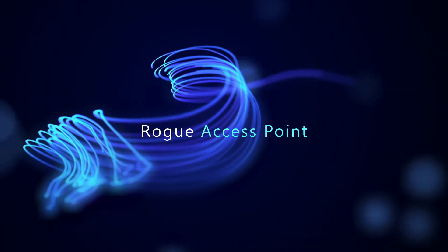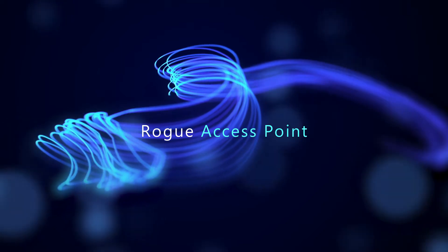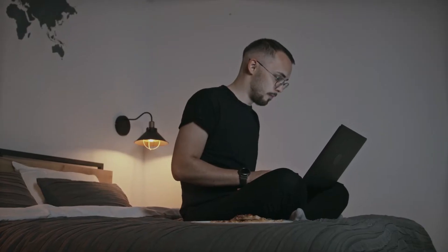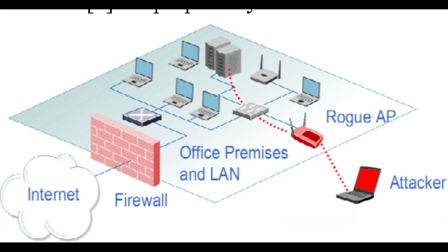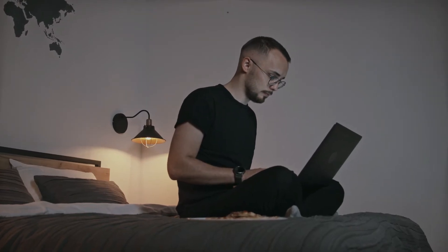The third is rogue access point. Devices with wireless cards usually try to automatically connect to the access point with the strongest signal. Attackers can set up their own wireless access points and trick nearby devices into joining their domain. All victims' network traffic can now be manipulated by attackers. This is dangerous because it doesn't even require the attacker to be on a trusted network — the attacker just needs enough physical proximity.